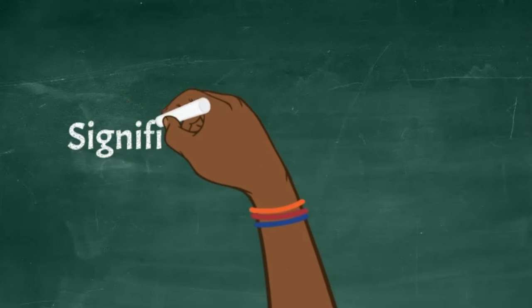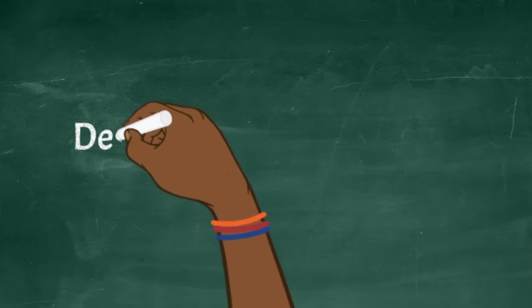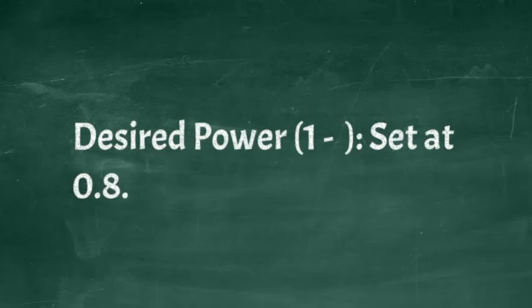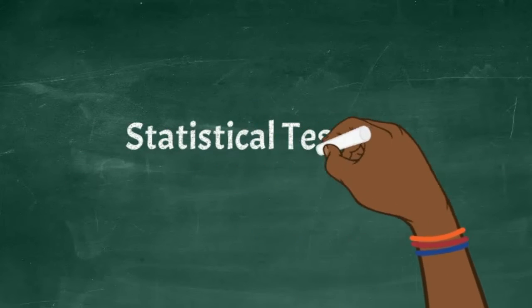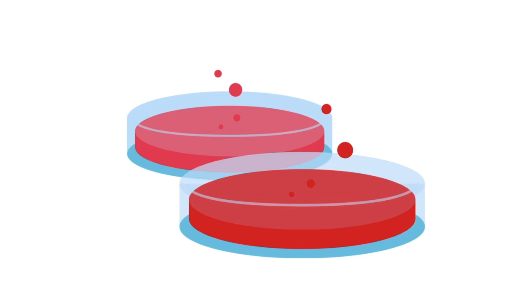Then we have to set the significance level alpha, and we can set that at the conventional 0.05. Then we need to determine the desired power, which is 1 minus beta, and so this is set at 0.8. Then the statistical test is a two-sample t-test, because we're comparing means of two independent groups. If it were small groups, we would maybe look at an ANOVA.